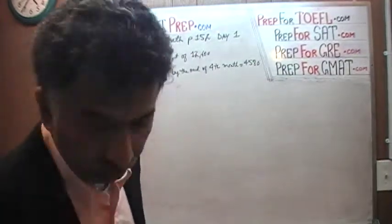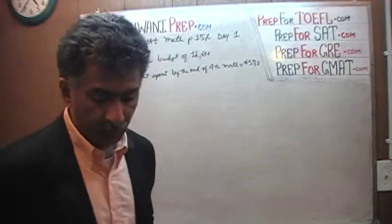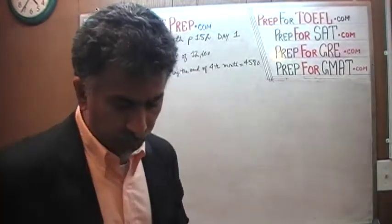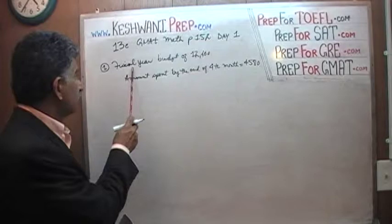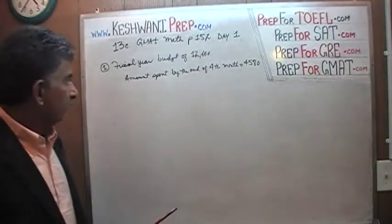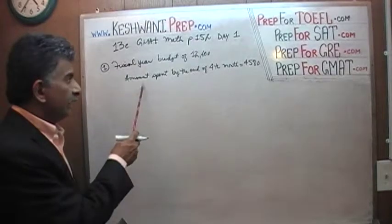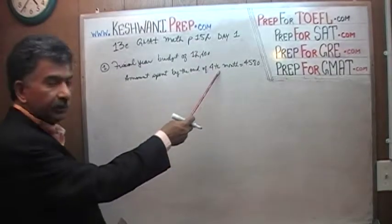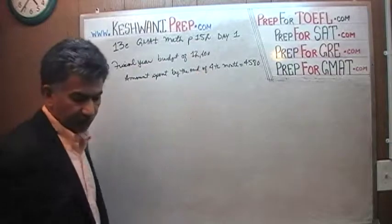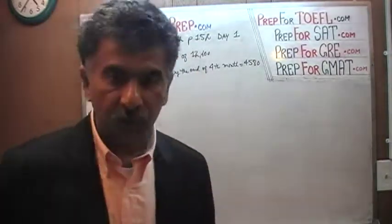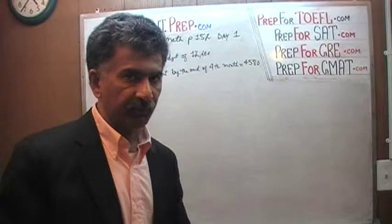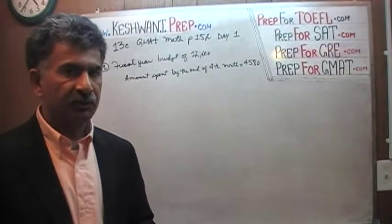I am assuming that you have the book in front of you so you are reading the problem with me. We have a project here. We are told that the fiscal budget for the project was $12,600. We are further told that at the end of the fourth month, they have already spent $4,580. The question is simply how much more have they spent compared to what they were supposed to spend — how much over budget are they?